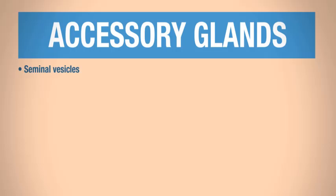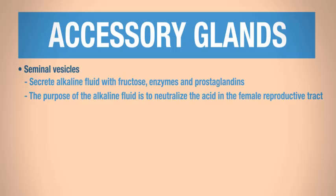The seminal vesicles secrete an alkaline fluid that contains fructose, enzymes, and prostaglandins. Remember, alkaline fluids are basic. The purpose of this alkaline fluid is to neutralize the acid that is in the female reproductive tract. The fructose is used for energy. Remember, sperm have to swim, so they need energy for motility. The enzymes in the fluid facilitate semen clotting. There are also prostaglandins in this fluid. These are for motility and viability of the sperm.